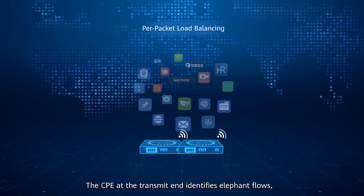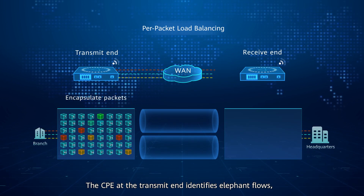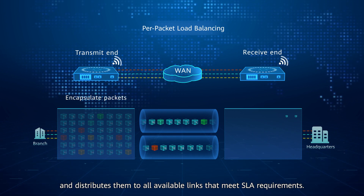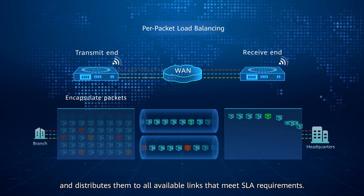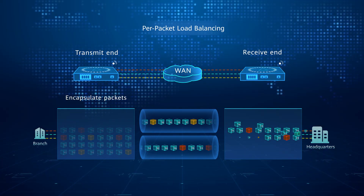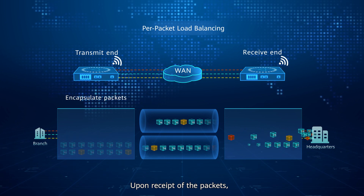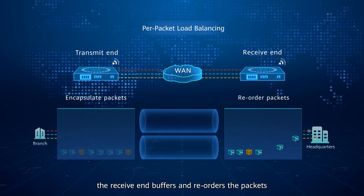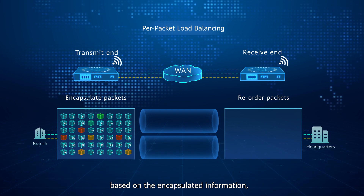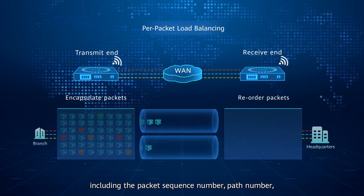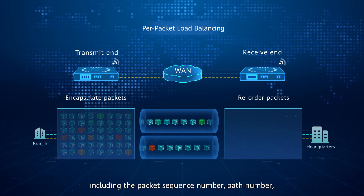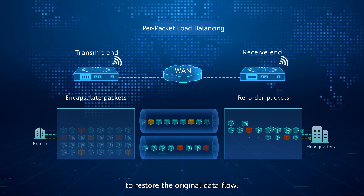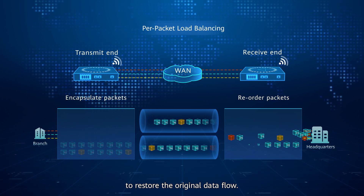How is per-packet load balancing implemented on an SD-WAN network? The CPE at the transmit end identifies elephant flows, encapsulates the packets, and distributes them to all available links that meet SLA requirements. Upon receipt of the packets, the receive end buffers and reorders the packets based on the encapsulated information, including the packet sequence number, path number, and incremental sequence number on the path to restore the original data flow.